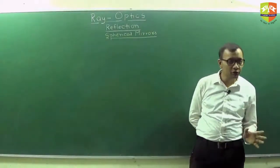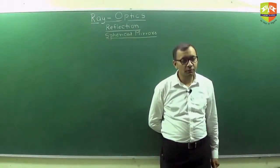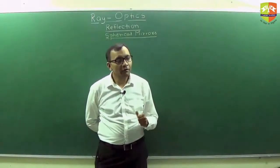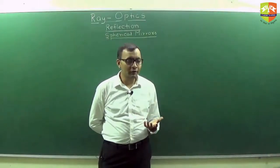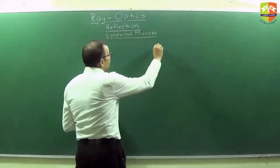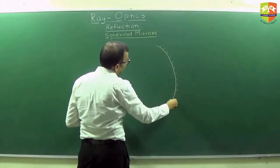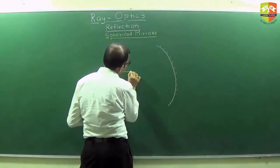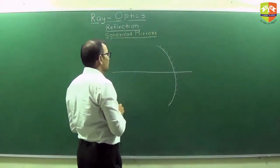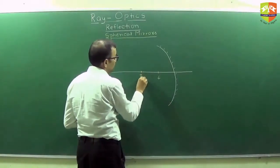There should be some formula because image will depend on the characteristic of the mirror and where the object is. Now we are getting into the algebra of the chapter where we will introduce the mirror formula. Draw neatly a concave mirror — slightly bigger will be better. This is the principal axis, this is F, this is R.